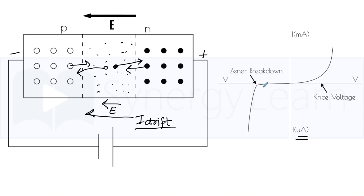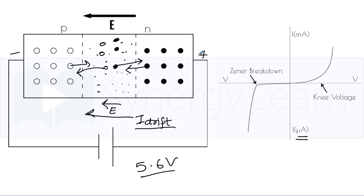As the voltage in reverse biasing is increased to a certain value — say 5.6 V for most semiconductors — the electric field creates a strain in the bonds and a large number of holes and free electrons are suddenly generated. This is called zener breakdown. Due to zener breakdown, the current in reverse biasing suddenly increases and the diode starts conducting beyond zener breakdown.